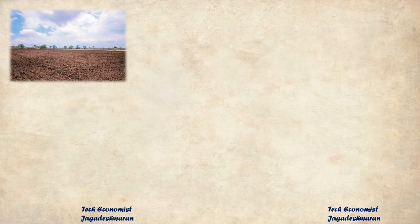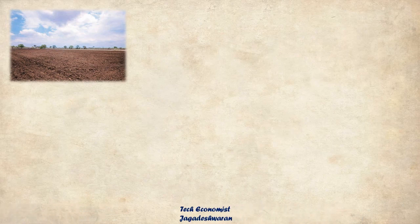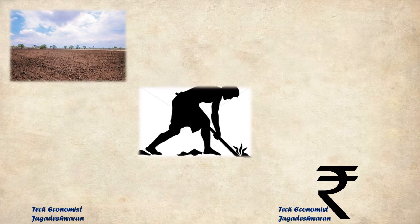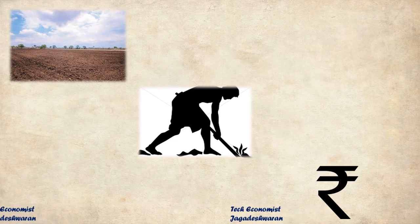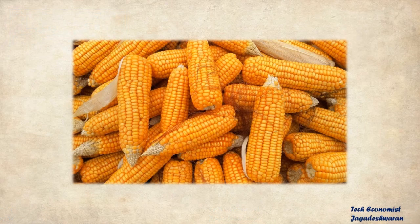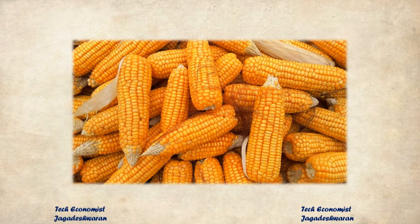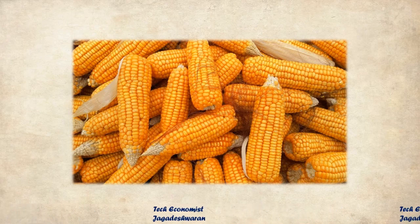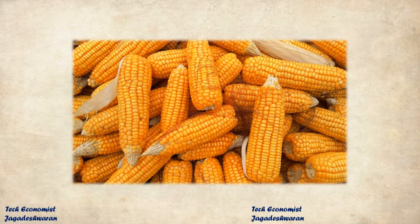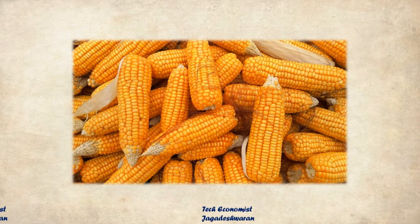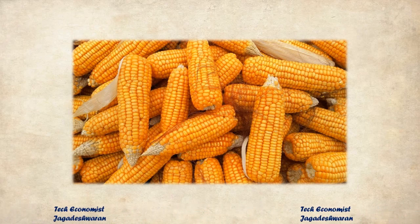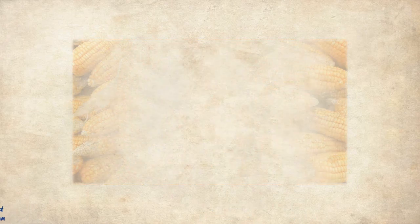For example, consider an agricultural example: land, labor, and capital are the three factors of production. These are the main factors involved in the production of an agricultural commodity, like maize. The farmer uses those factors and, using them, the maize is produced or harvested by the farmer and then sold.